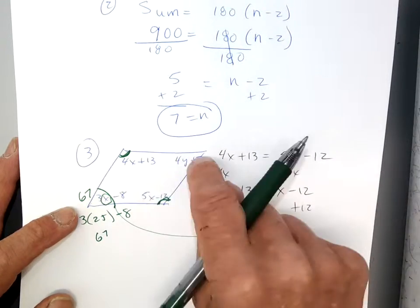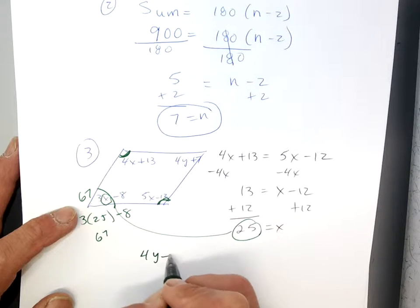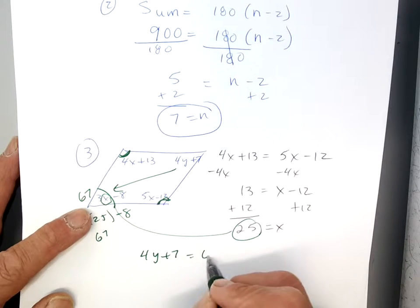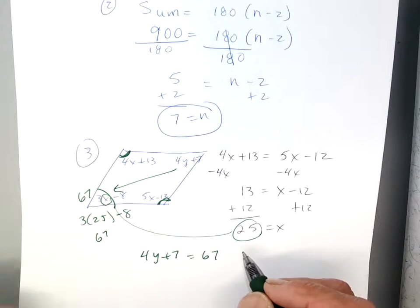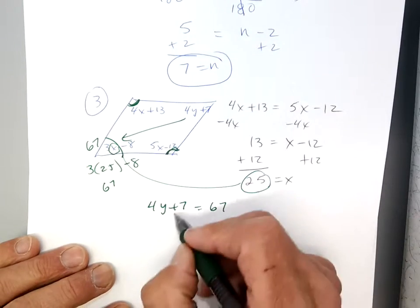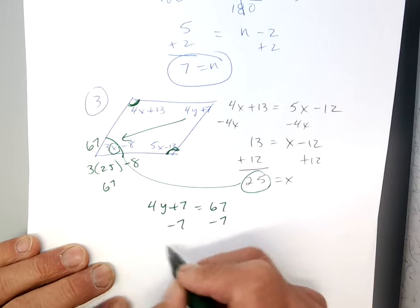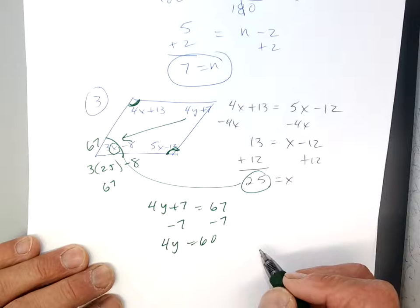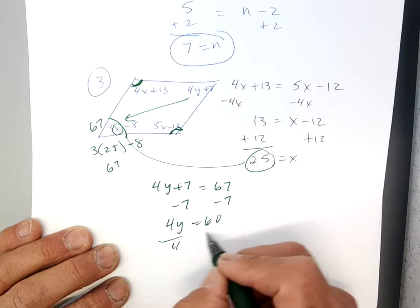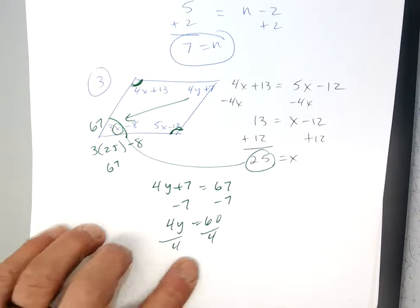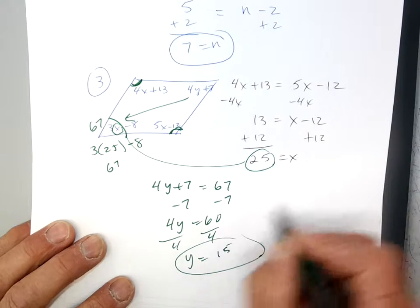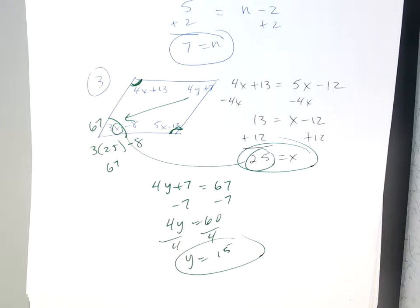So this is 67. 4y plus 7 also has to be equal to 67, right? These two angles have to be equal. So, okay, I'll take my 4y plus 7, and it's got to be equal to that angle, which is also 67. Okay, to solve for y, then I'll just minus 7, minus 7. 4y equals 60. Divide by 4, divide by 4. What's that, 15, I think? Yeah. Yeah, 15. So y is equal to 15.